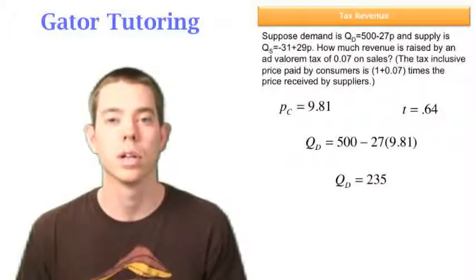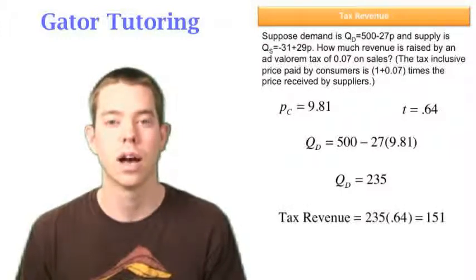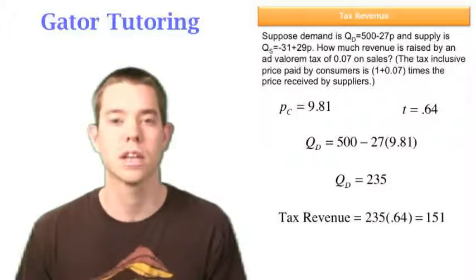So what's my tax revenue? Well, it's how many units I sold times the tax per unit, which is 64 cents. In this case, it's 151.